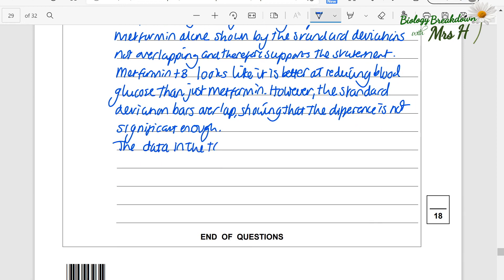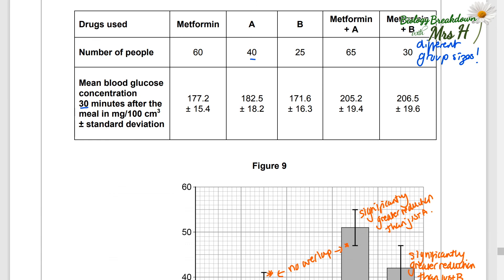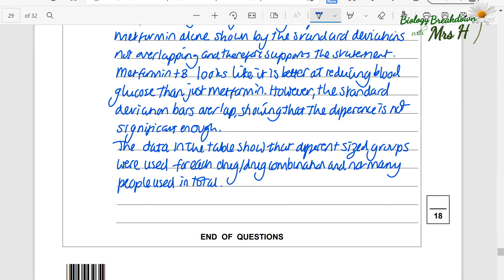The data in the table show that different size groups were used for each drug and drug combinations and not many people were used in total. And other information like the concentrations of drug have not been specified. So the results may not be valid.